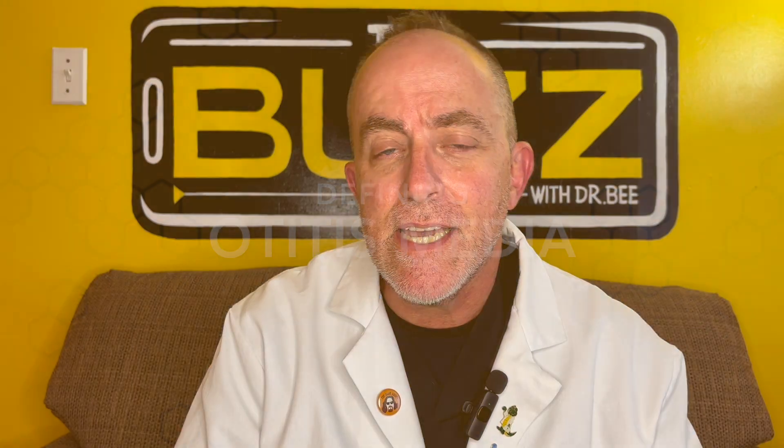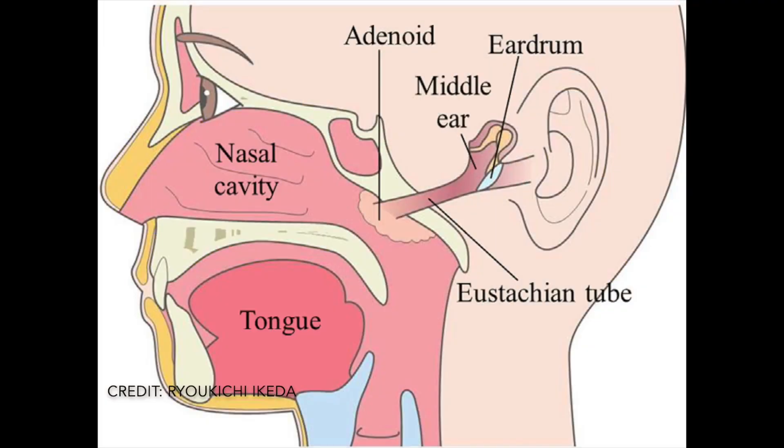When someone says, 'I think my kid has an ear infection,' what they're talking about is an infection on the inner side of the eardrum, and that's called the middle ear — that little chamber there. When you get an infection in that section of the ear, we call it otitis media, or a middle ear infection. Here's a diagram of the anatomy we're talking about.